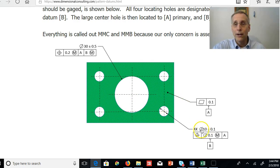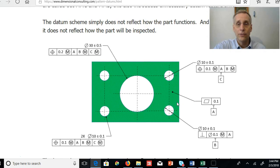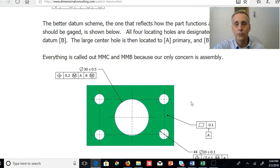And the way it's toleranced now is the way it functions, it's the way it's going to be manufactured, it's the way it's going to be gauged. This is the appropriate way to do it. This reflects reality. This does not reflect reality. This reflects reality.